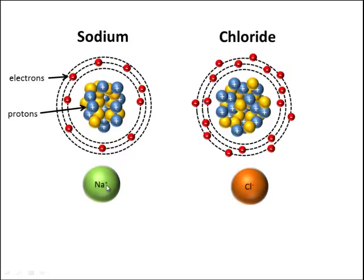Sodium also becomes an ion because it has one fewer electron than protons. It has 11 protons and 10 electrons. Sodium and chlorine are now ions that attract each other.